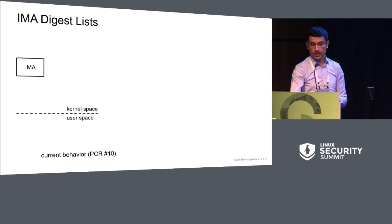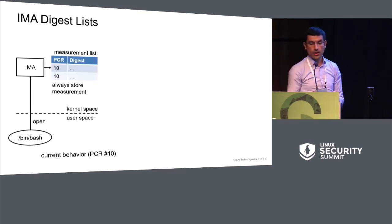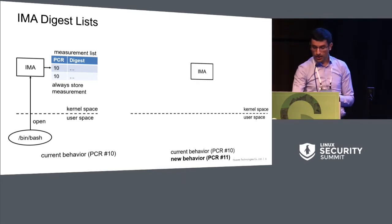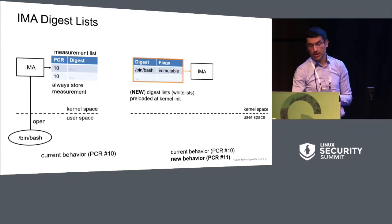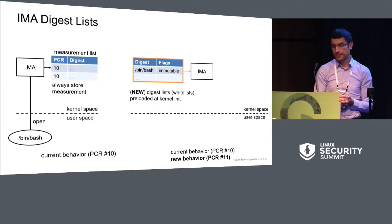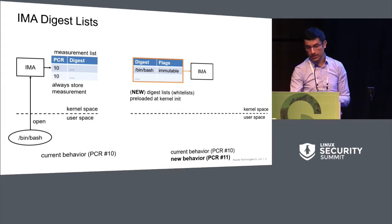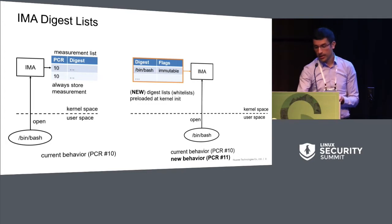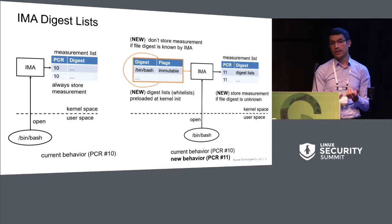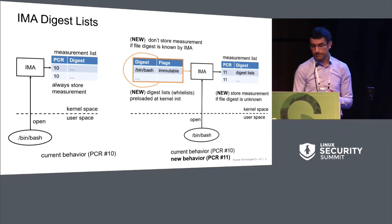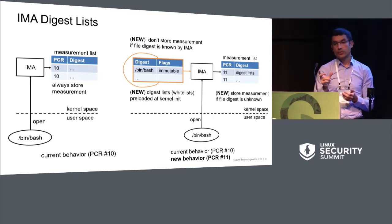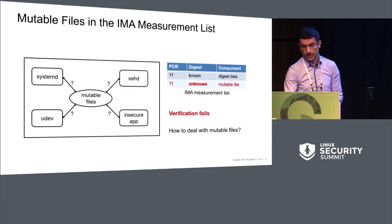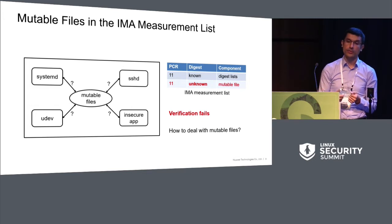Regarding the digest list: normally when a file is accessed in the system, IMA always puts the measurement in the measurement list. With our approach, before at kernel initialization time, we preload a whitelist in the kernel with all the reference measurements. For example, for bin bash, when bash is accessed, IMA checks first if the actual digest is in the whitelist, and if it is, it does not add the measurement to the list. Otherwise, if the file is unknown, the file is added to the list. In this way, the only measurements we should have, if all files are recognized, would be only the measurement of the whitelist. But unfortunately, we have some unrecognized files which are the mutable files.